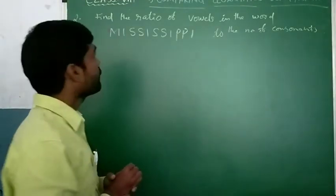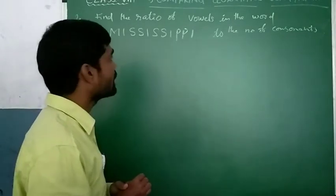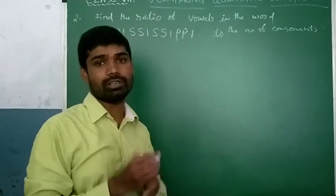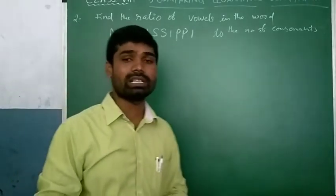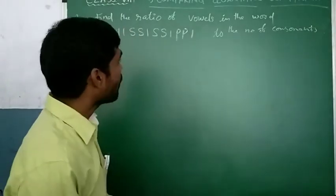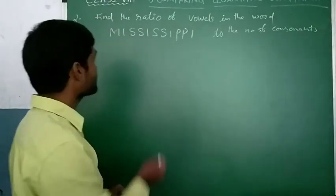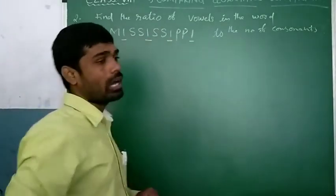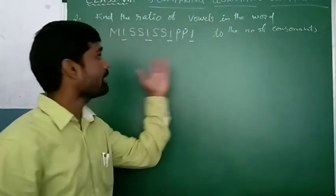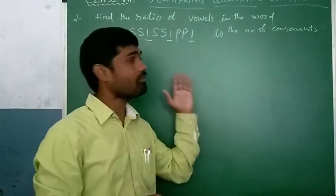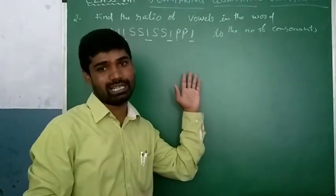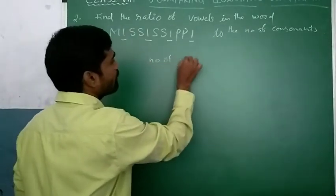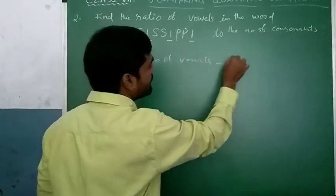Another problem: find the ratio of vowels in the word 'Mississippi' to the number of consonants. In English, the vowels are A, E, I, O, U. Let us observe the vowels in 'Mississippi'. Only the vowel 'I' appears in the word, and it is repeated 4 times. So the number of vowels is equal to 4.